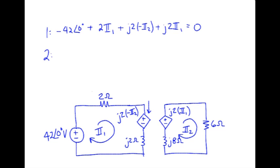Mesh 2 starting again lower left hand corner we have j8 times I2. I bump into the negative sign first on that source, so I write down a negative. The voltage source value is j2 I1. Coming around on the right side we've got 6 I2 equals 0.